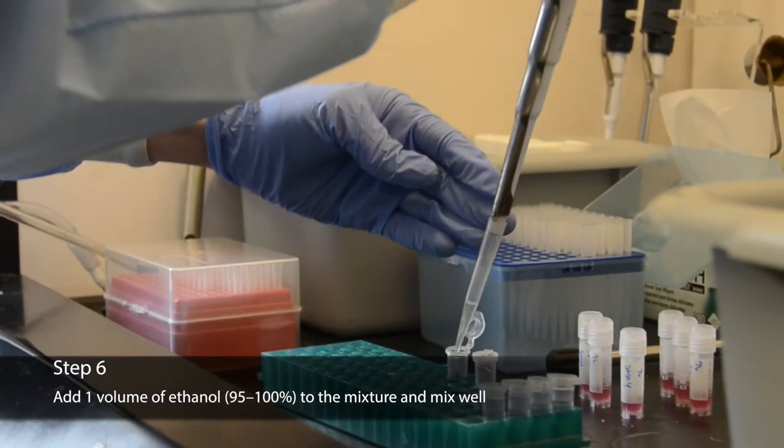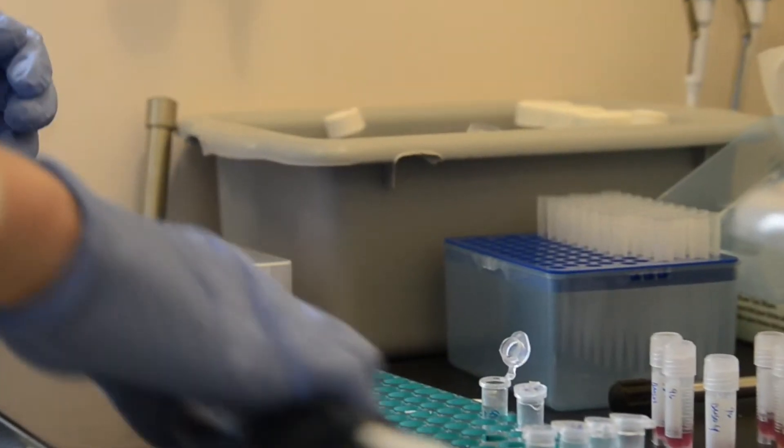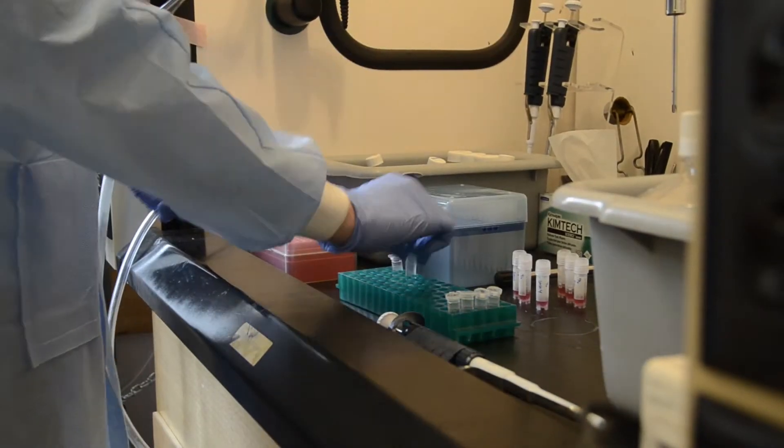Next, add one volume of 95 or 100% ethanol to the mixture from step 5 and mix well. Once again, do not vortex.